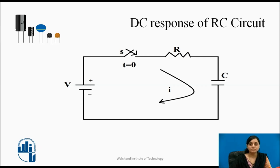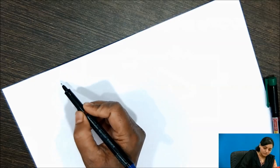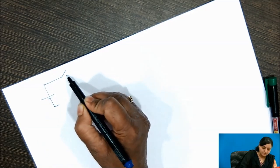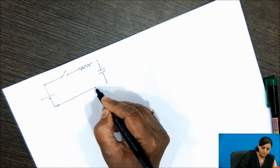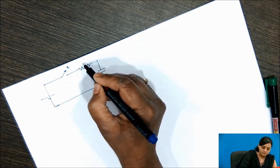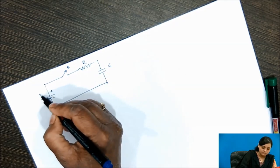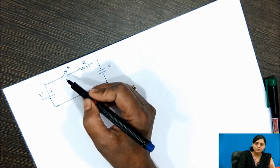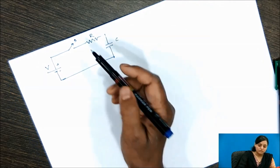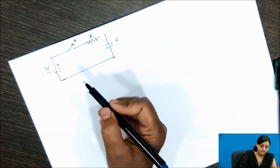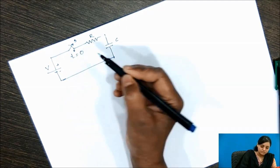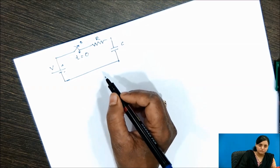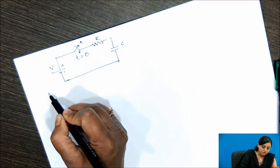Now let us derive the DC response of the RC circuit. We have a circuit where a DC source is connected in series with a resistance and a capacitor, along with a switch. Before time t = 0, the switch has not been closed, meaning the circuit is not connected. At time t = 0, the circuit is closed.